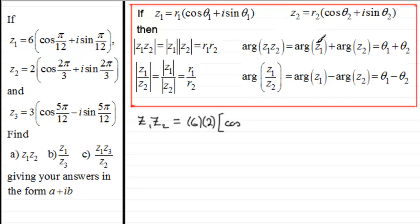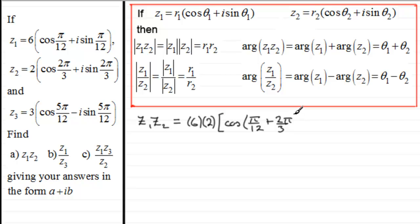The argument is pi upon 12 plus two-thirds pi. We also have plus i sine of that same argument: pi upon 12 plus two-thirds pi.